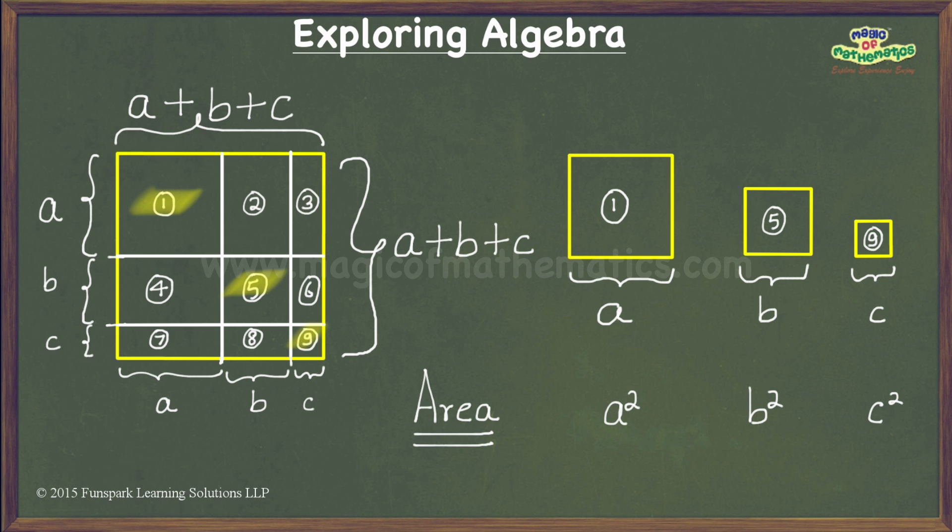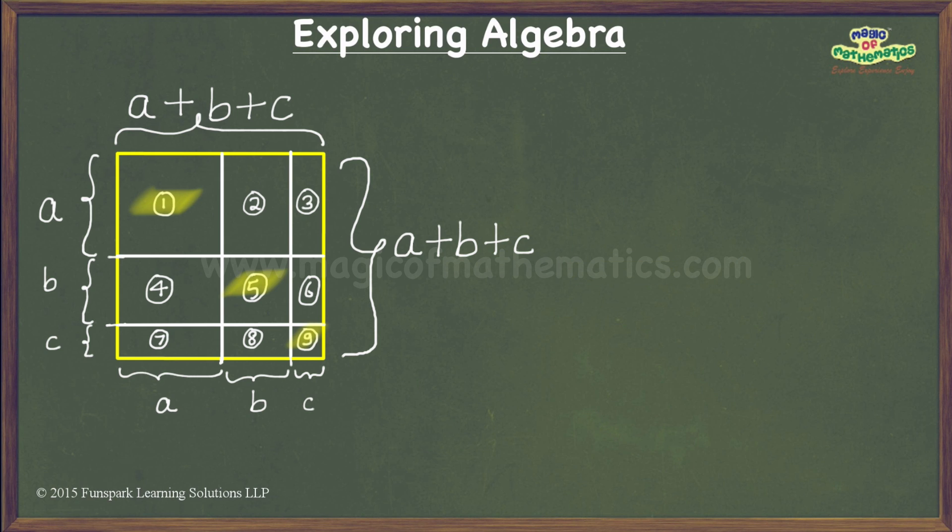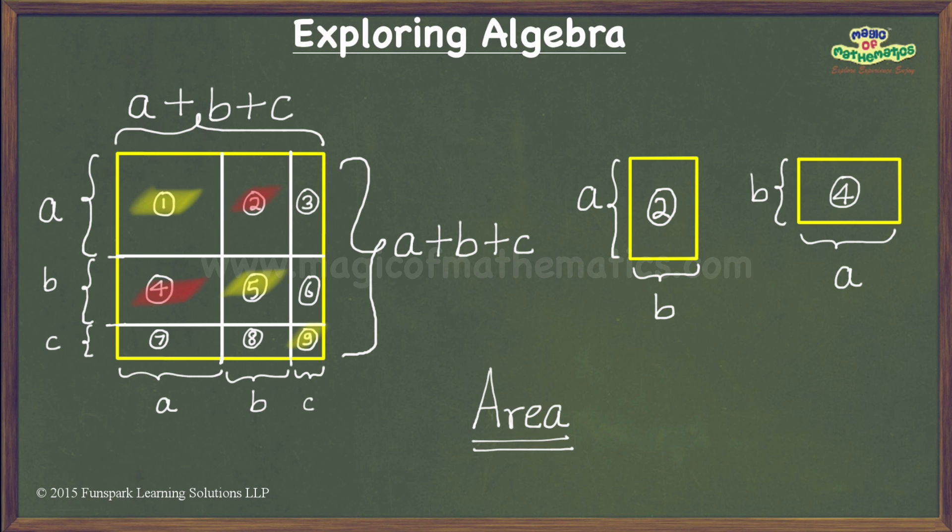Now that we are done with the square pieces, let us turn our attention to the rectangular ones. Pieces numbered 2 and 4 are rectangles of dimensions a units by b units each. Hence, their areas are ab square units each.